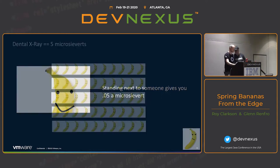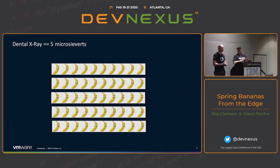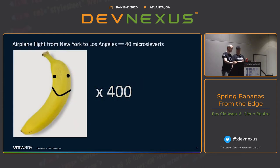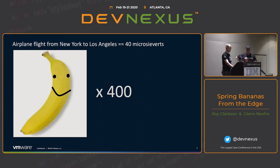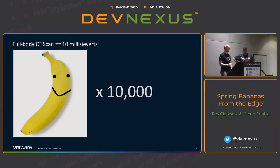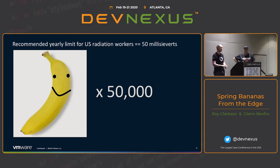A few more reference points: going to the dentist and getting an x-ray is five microsieverts — about 50 bananas. An airplane flight from New York to Los Angeles, because you're up in the air with less atmosphere protection, is 40 microsieverts — about 400 bananas. A full body CT scan is 10 millisieverts, which is 10,000 bananas. And the EPA recommended yearly limit for US radiation workers is 50 millisieverts — 50,000 bananas a year.